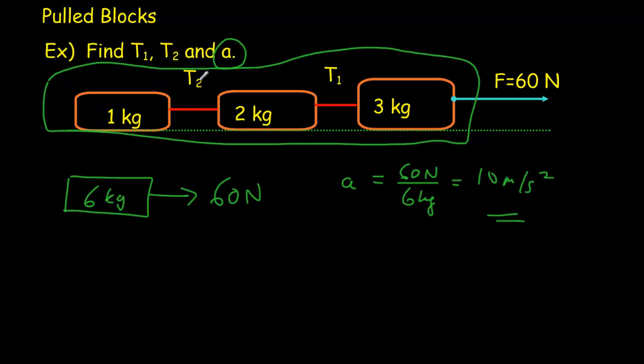We'll find T2 first and what we do there is we isolate the 1 kilogram mass. And let's do a free body diagram of that 1 kilogram mass. It's got one important force on it, that T2. There is an up force and a down force, normal and weight, but they're going to cancel out. There is no friction in this system.